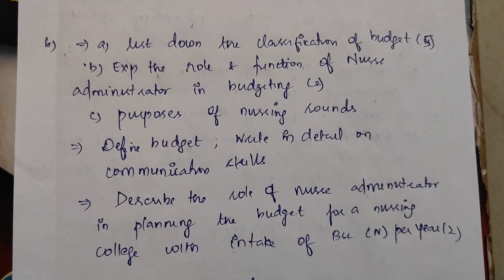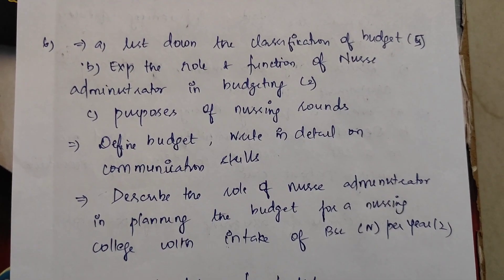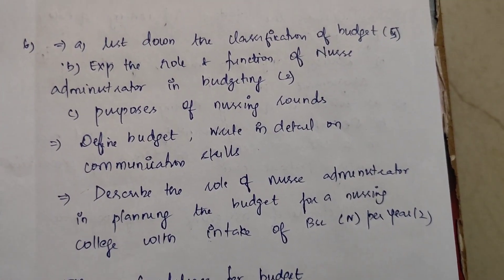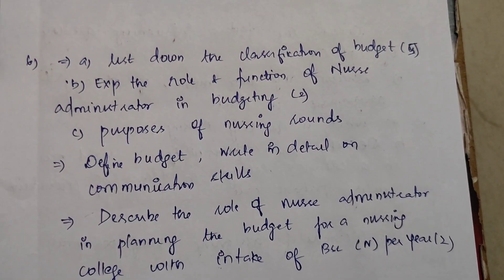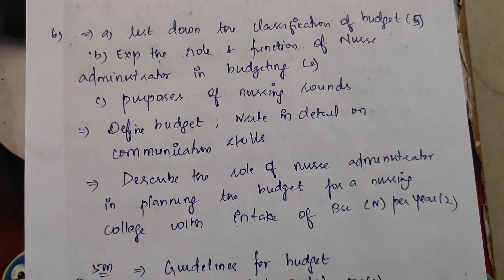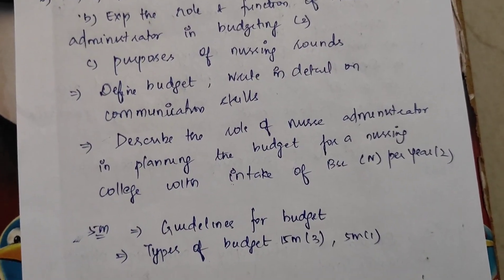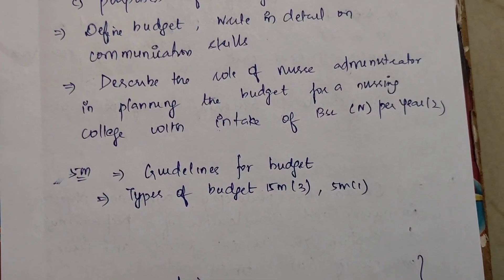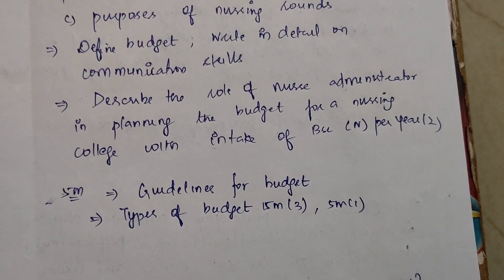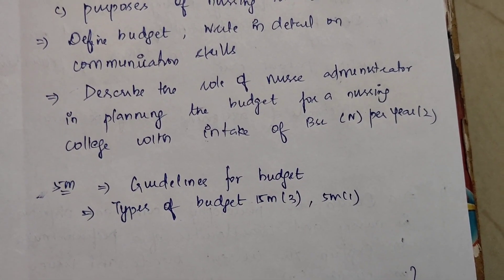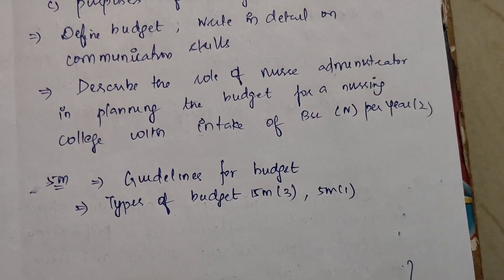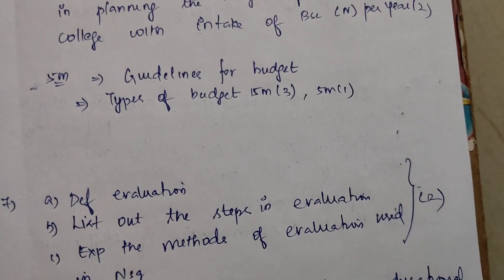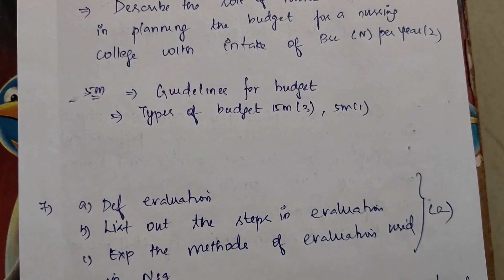Next, list down the classification of budget. Explain the role and function of the nurse administrator in budgeting — this appears two times, and overall this question comes five times. It is an important question. Next, discuss the purpose of nursing rounds. Define budget and write in detail on communication skills. Describe the role of the nurse administrator in planning the budget for a nursing college with BSc nursing student intake — this question appears twice. Find guidelines for a budget and types of budget — 15 marks three times and also in 5 marks.